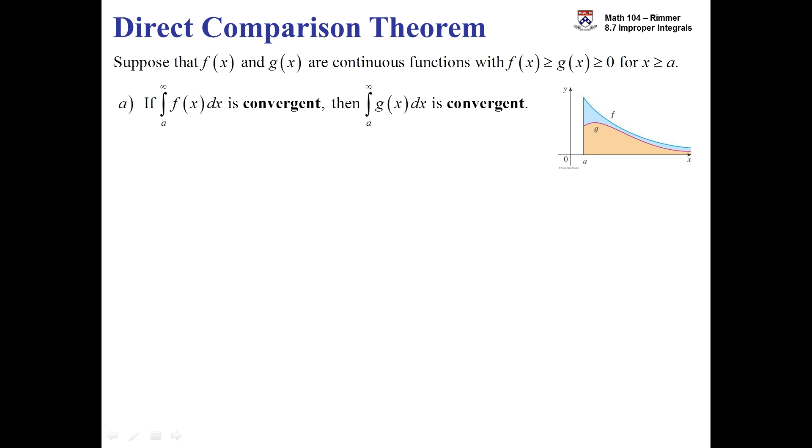If it turns out that the integral on f is convergent, then it must be true that the integral on g is also convergent. So think about what that means. This integral represents the area under the curve. So if f has a finite area, then the smaller g function will also have to have a finite area. That's the first part of the direct comparison theorem.